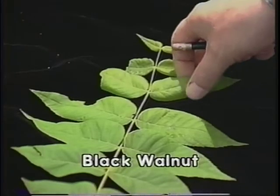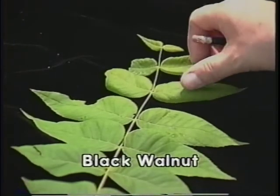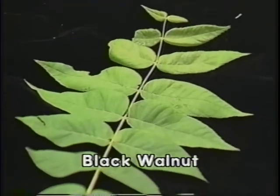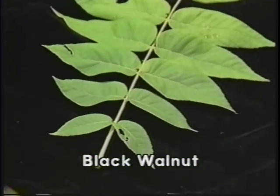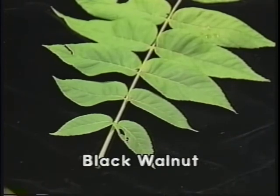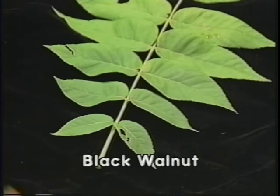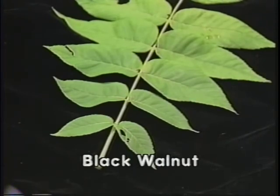Black walnut is a pinnately compound leaf made up of fifteen to eighteen leaflets, which are about three inches long, making the total length of the leaf approximately twelve to twenty-four inches. The leaves are arranged in an alternating pattern on the twigs. Each leaflet is lanceolate in shape and finely serrated. A terminal leaflet is absent in the black walnut.